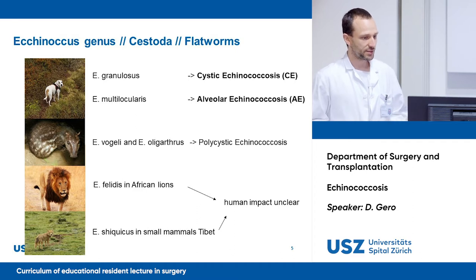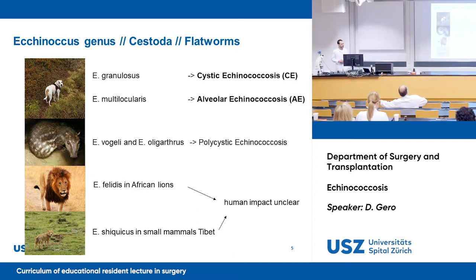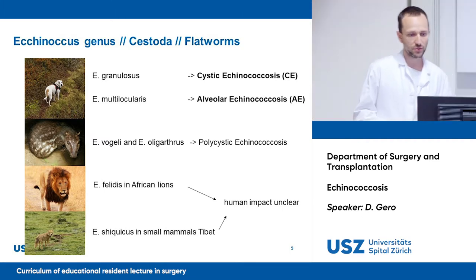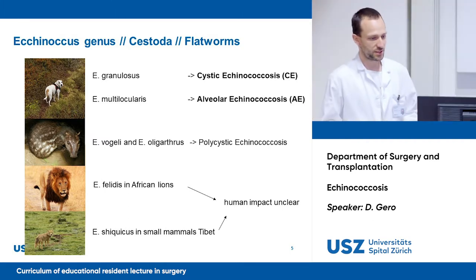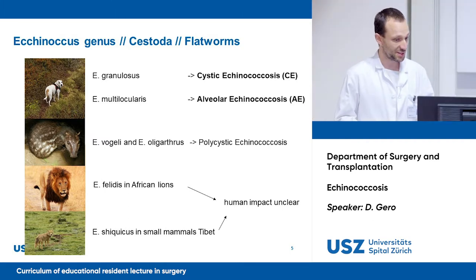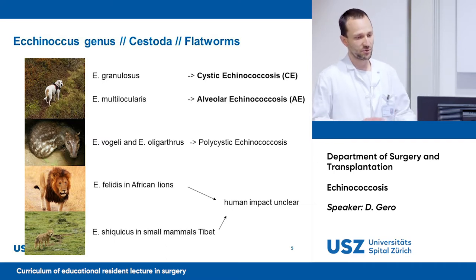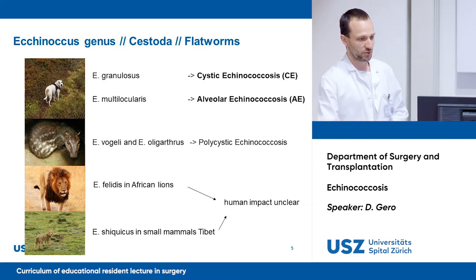More recently, it has been described that there are newer Echinococcus species, such as Echinococcus vogeli and oligarthus, which can be responsible for polycystic echinococcosis, or Echinococcus felidis and shikikus, which haven't yet been related to a human pathology.